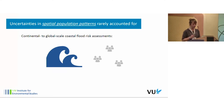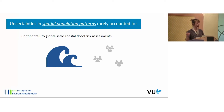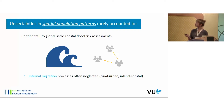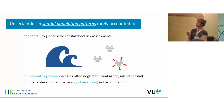However, these assessments usually do not account for internal migration processes — rural-urban migration and inland-coastal migration are rarely assessed — and they do not account for spatial development patterns, mainly referring to urban sprawl. If you do not account for these processes, you potentially over- or underestimate future coastal flood risk. We used the Mediterranean region as a case study due to two main reasons: high population densities and urbanization levels in the direct coastal zone, and large differences in socioeconomic development across the northern, southern, and eastern parts of the region.